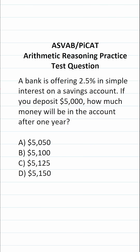The first thing you have to calculate is how much interest your money is going to earn in that account. To do that, we're going to use the simple interest formula: Interest I is equal to your principal times your rate times time.